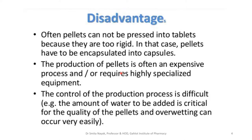The production of pellets is an expensive process and requires highly specialized equipment. So unless the cost justifies the need for pellets, pellets are not preferred. Control of the production process is quite difficult — for example, the amount of water to be added becomes very critical. If less water is added during processing, the pellets are brittle, and if more water is added, a sticky dough is formed and free-flowing pellets are not produced.